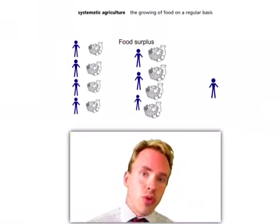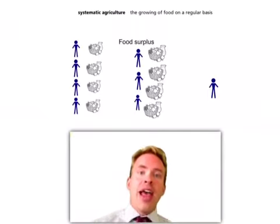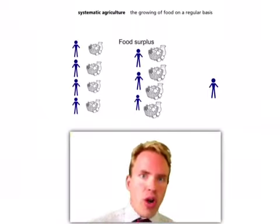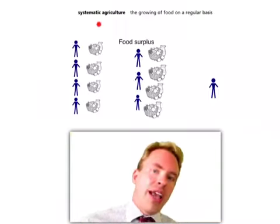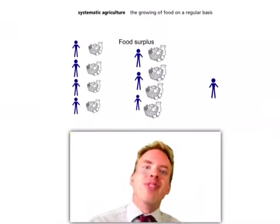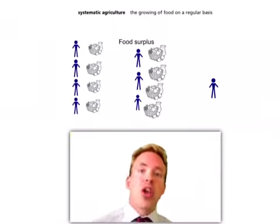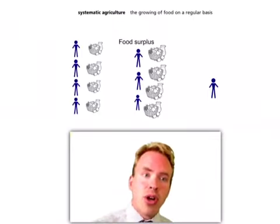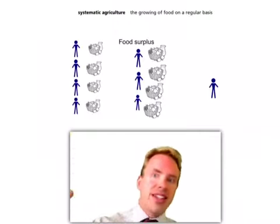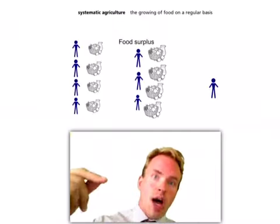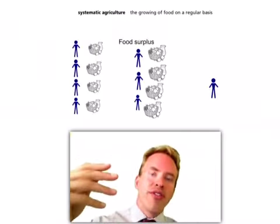You end up with more food than you absolutely need to eat right away. We're going to call farming, as it's invented, systematic agriculture. What does that mean? It means farming — the growing of food on a regular basis — and what it does is it creates a food surplus. Before systematic agriculture, you had four people getting the food, and they got enough food basically to feed themselves. Everyone needed to work for getting the food.